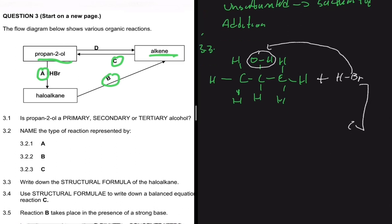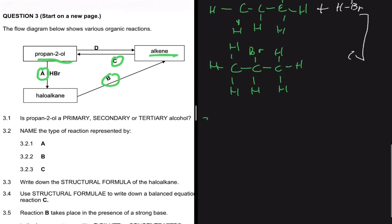So our product, which is the structure of the haloalkane, we're going to have 1, 2, 3. And then instead of the OH, we have the Br. And then elsewhere, we have hydrogens like we always do. So the answer of 3.3 should look like this.